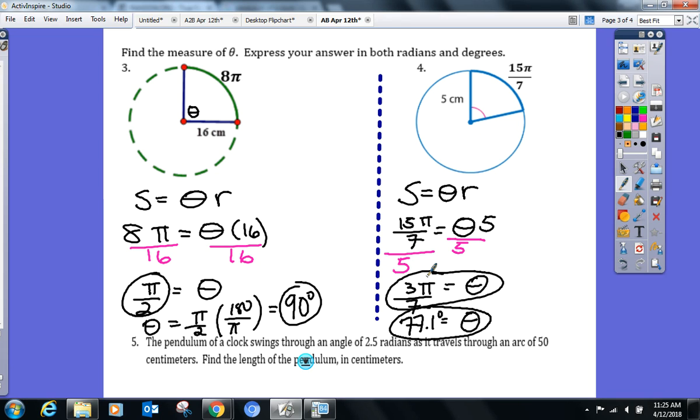Before I move on to the word problems, are we okay on when to use what formula? If given radians, you've got to use S equals theta R. If given degrees, you use the formula we used on Tuesday. If you get a choice, you probably want to use this one because it's less involved.